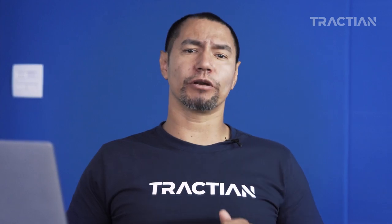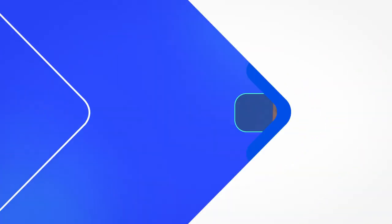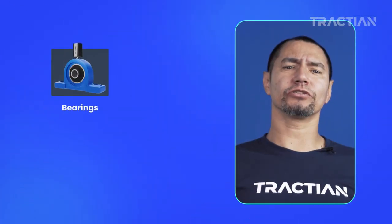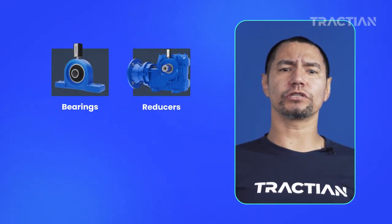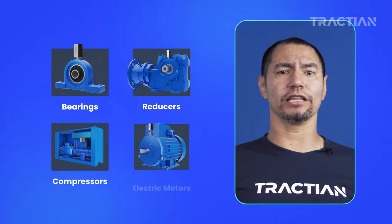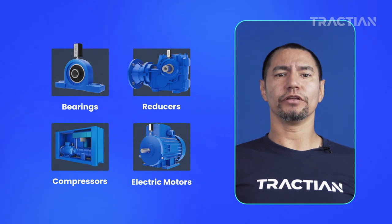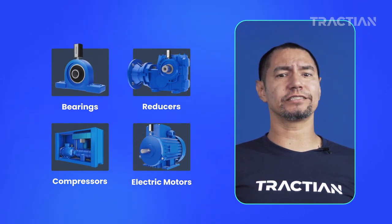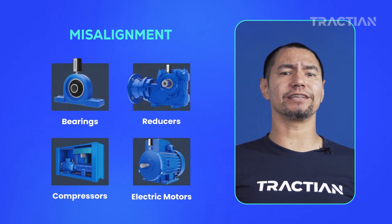I'd like to invite you to see how our solution helped Corteva save costs by detecting an unbalance — the link to the article will be in the description below. Bearing houses, reducers, compressors, and electric motors are the assets that may suffer misalignment.